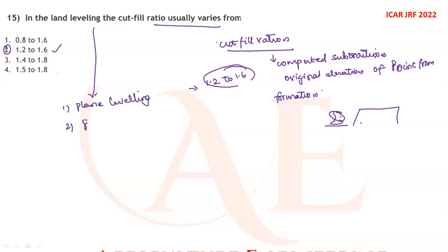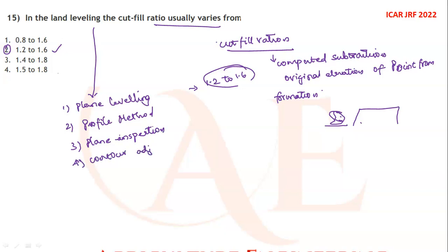In land leveling there are four methods: plane leveling, profile method, plane inspection method, and contour adjustment method. Questions will be asked on these methods.